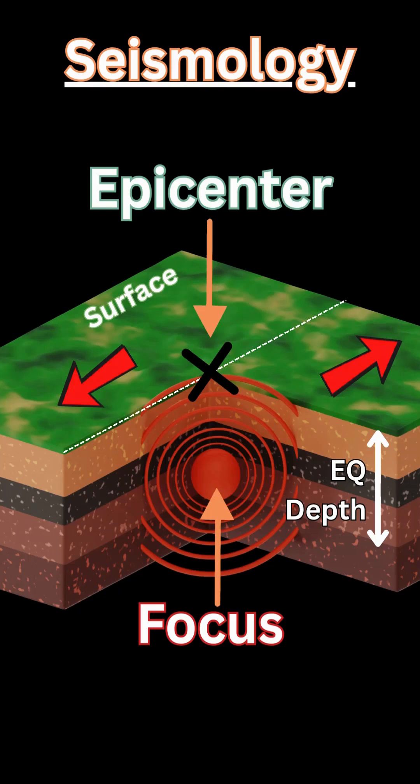The energy is released, there is displacement, there is slip, and the energy is released through the rock layers and through the surface.